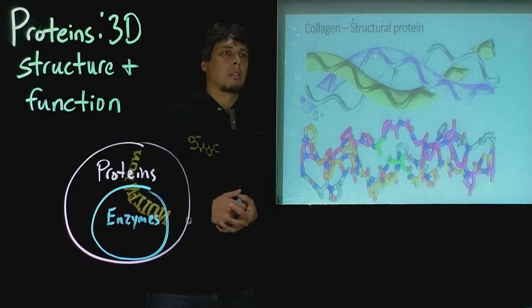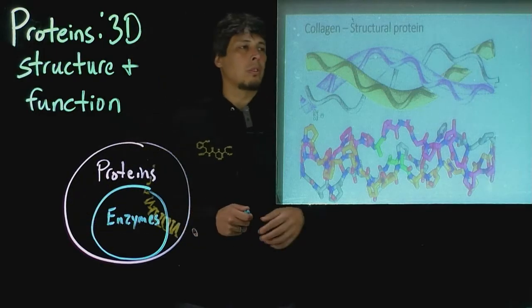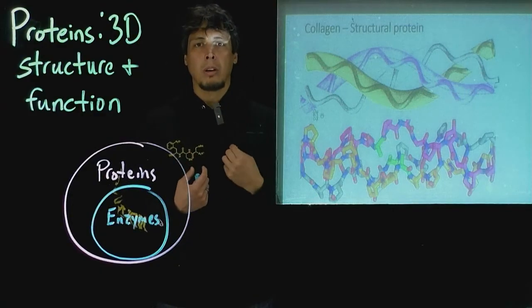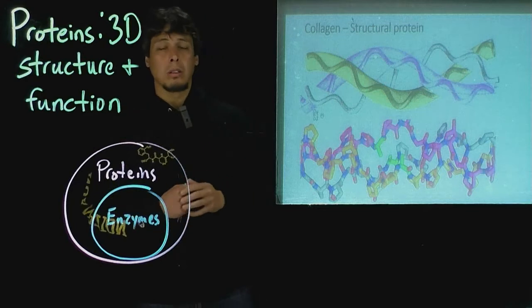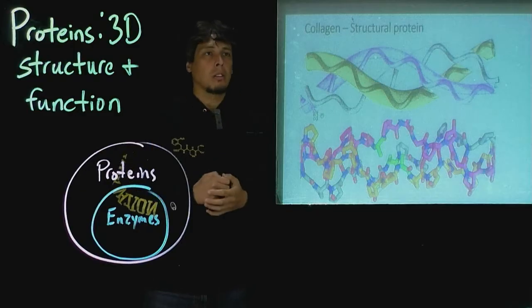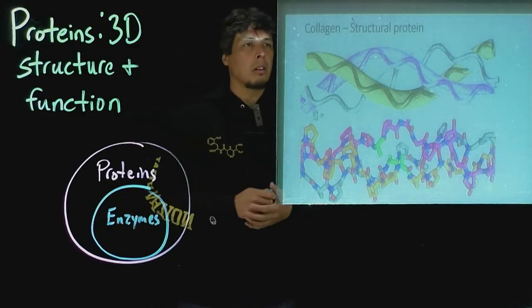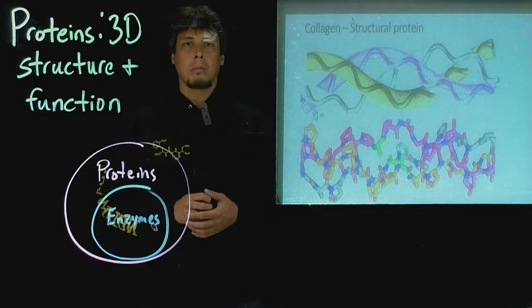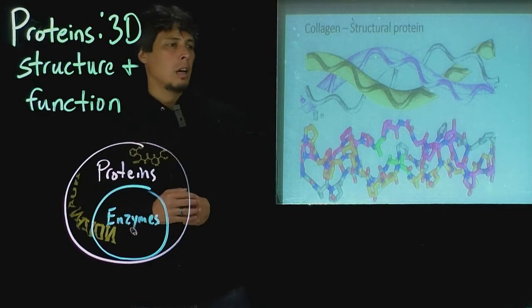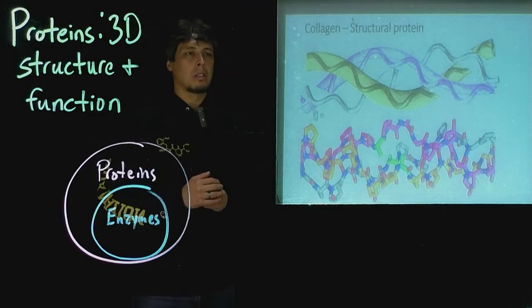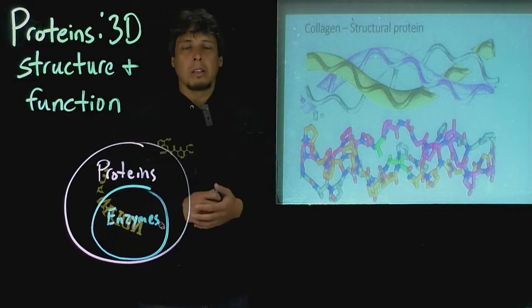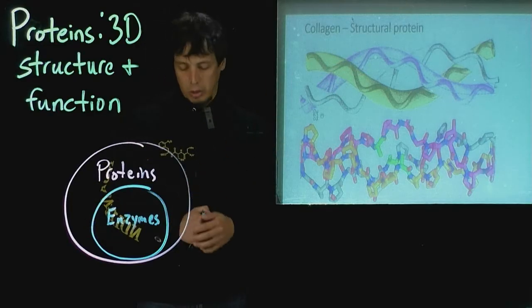But this first one is called collagen, and so this forms a fibrous-like structure, almost like a fiber in a fabric or something. And as we know, fabric, for instance, is very strong. So collagen is a structural protein, and it also provides some elasticity. We'll look at this a little bit later in the class about how this is able to confer both of those types of properties. But you can think of just looking at the fibrous-like structure of this, that this can be a very strong and structural protein.